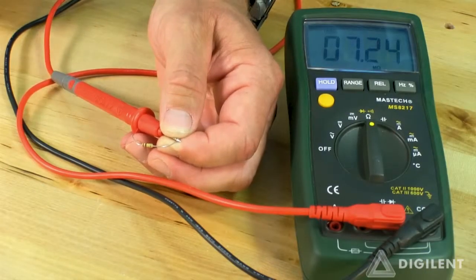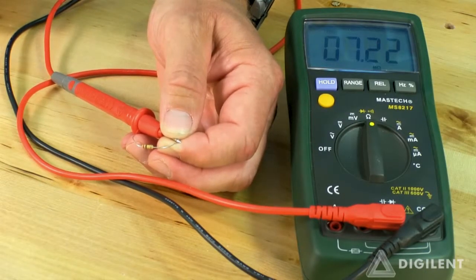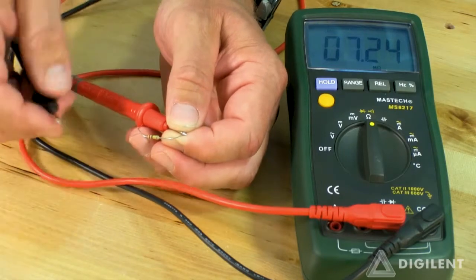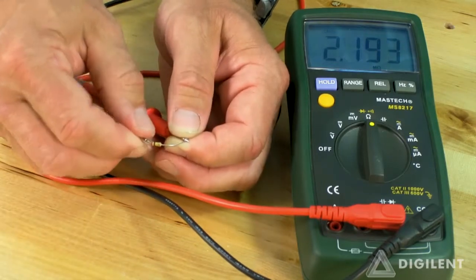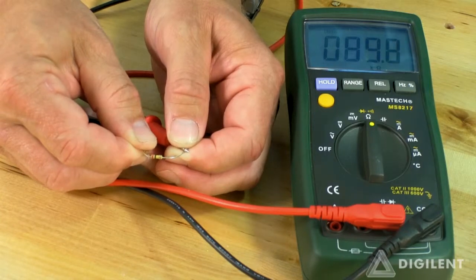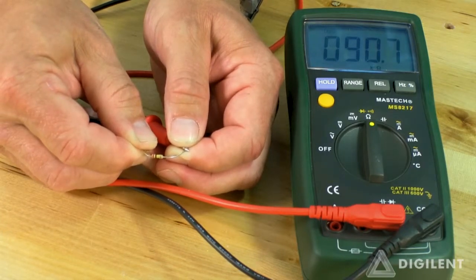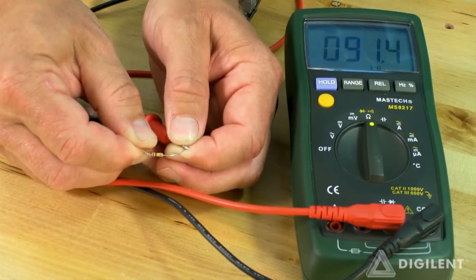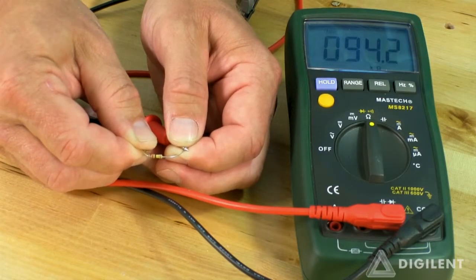Now we want to make sure that we don't place ourselves in the circuit whose resistance is being measured. For example, if I hold this resistor this way, our resistance is only about 90 kilo-ohms. I'm measuring the resistance of my body along with the resistance of the 190 kilo-ohm resistor.